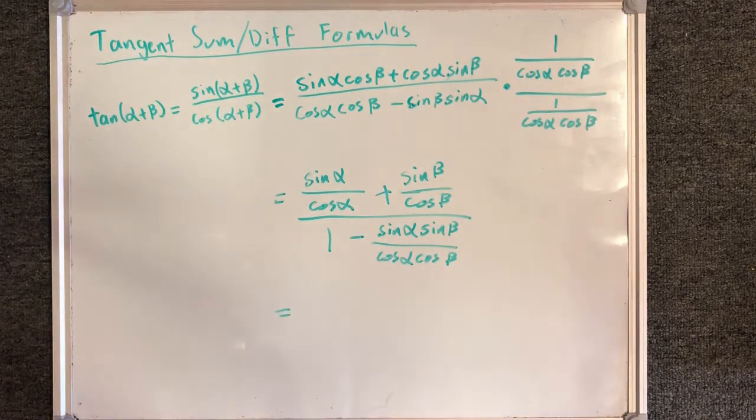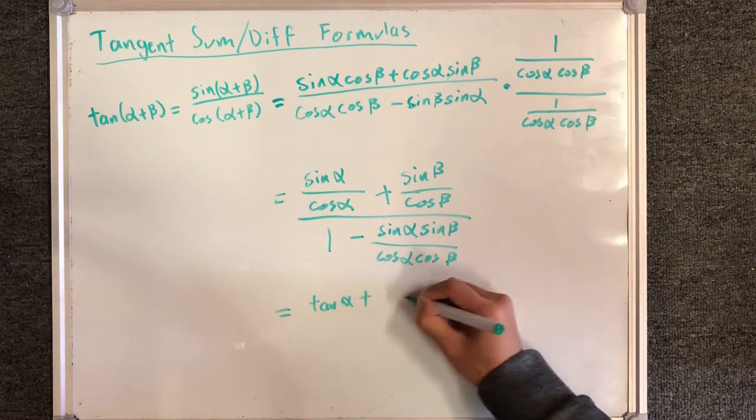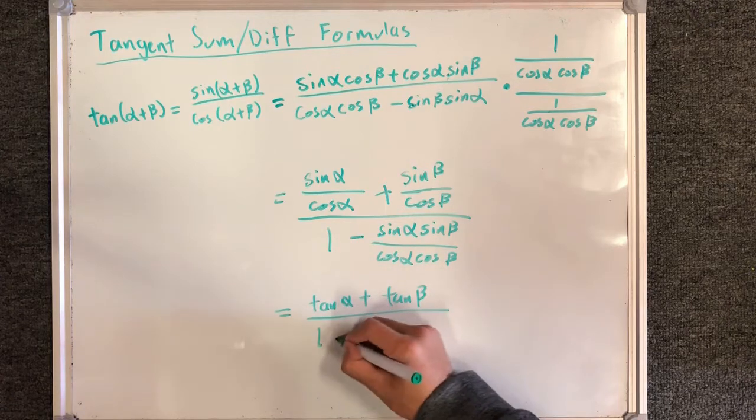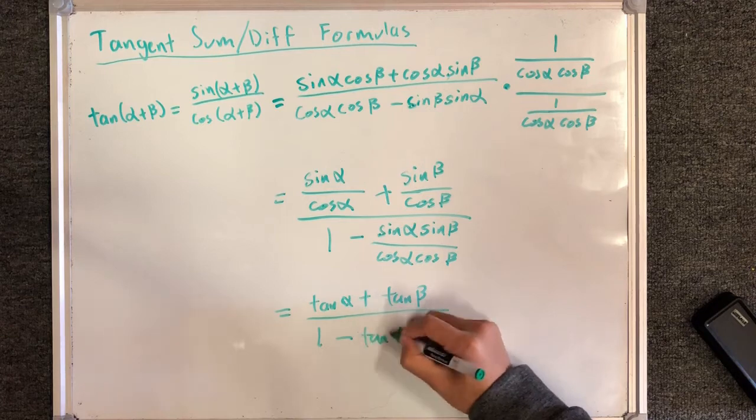Simplifying everything in the final step, sine over cosine, this is tangent alpha plus tangent beta. In the denominator, I have 1 minus sine over cosine for each term, giving tangent alpha tangent beta.